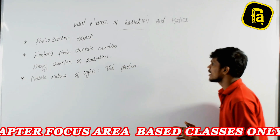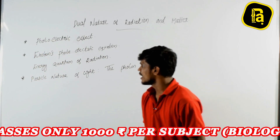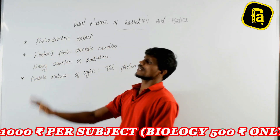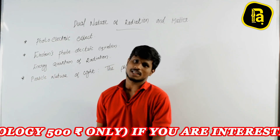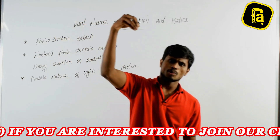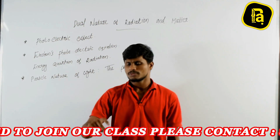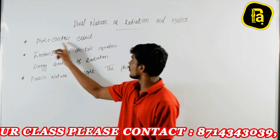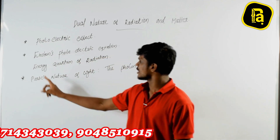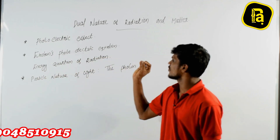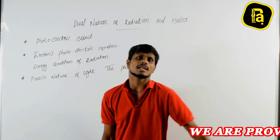Now we are going to study this chapter. The focus points are 3 points. First, photoelectric effect — we are studying the photoelectric effect in physics. When light of suitable frequency falls on a metal surface, electrons are emitted. Second, Einstein's photoelectric equation and energy quantization of radiation. This is a very very important topic.